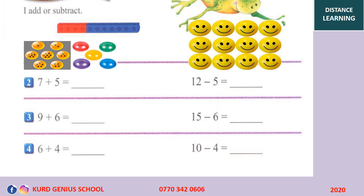These are 7 balls: 1, 2, 3, 4, 5, 6, 7. Plus means we add 5 more balls: 1, 2, 3, 4, 5. Now let's count all of them together — 1, 2, 3, 4, 5, 6, 7, 8, 9, 10, 11, 12. So 7 plus 5 equals 12. We write 12 here.